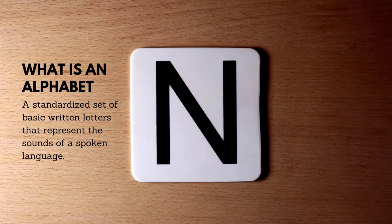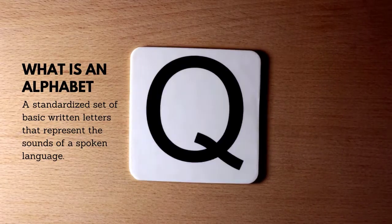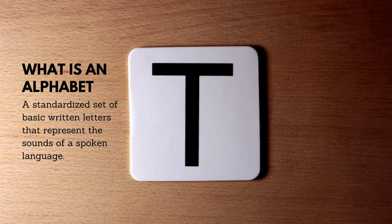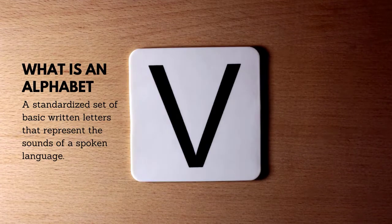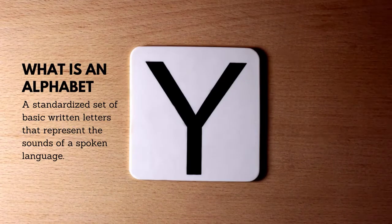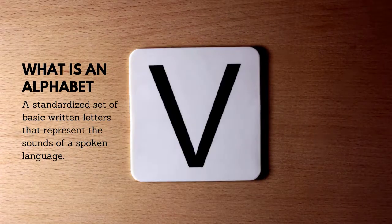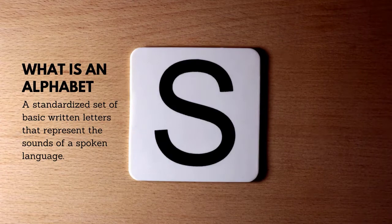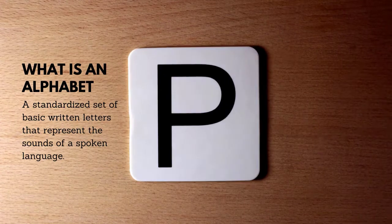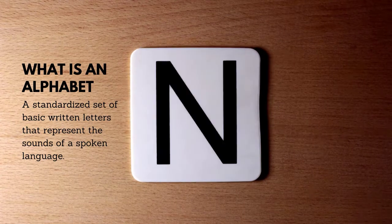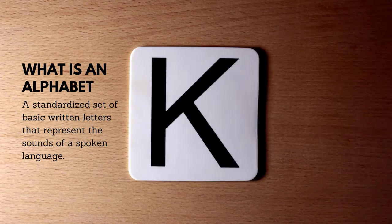What is an alphabet? An alphabet is a standardized set of basic written letters that represent the sounds of a spoken language.